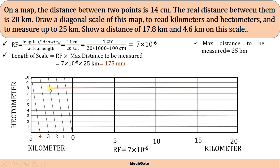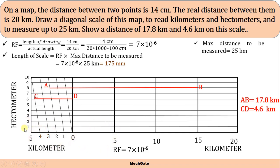So this is my 17.8 kilometers. Similarly, 4.6 kilometers: 4 kilometers is marked here and 0.6 is nothing but 6 hectometers, so we move up to 6 — this is 4.6 kilometers. Logically, both divisions should be equivalent: this indicates 5 kilometers and this also indicates 5 kilometers. If this indicates 1 kilometer, then this should also indicate 1 kilometer, which is equivalent to 10 hectometers.